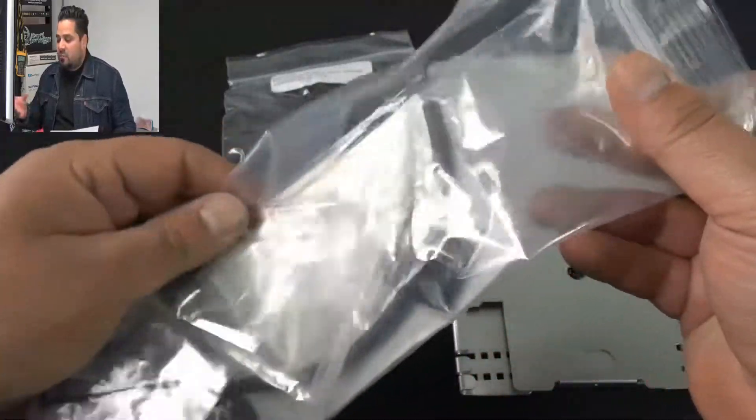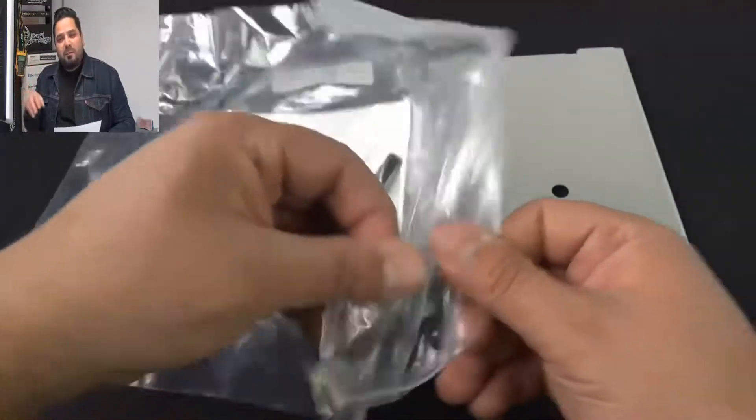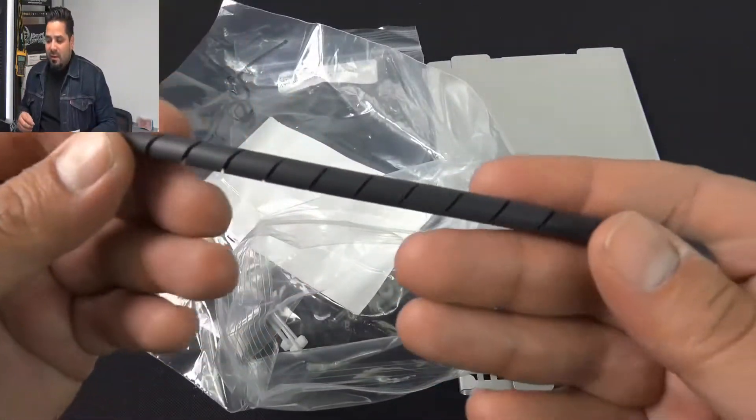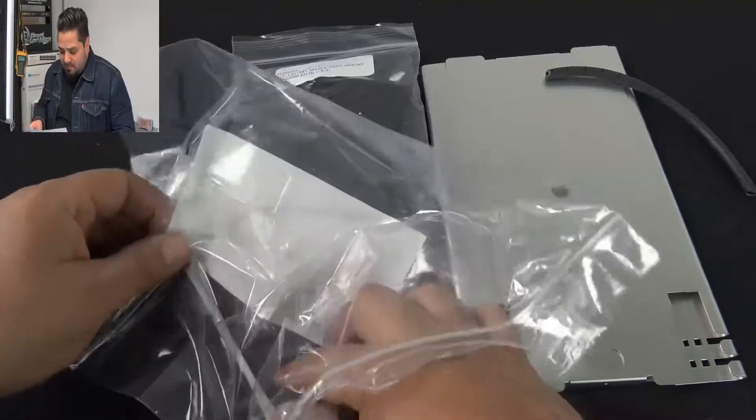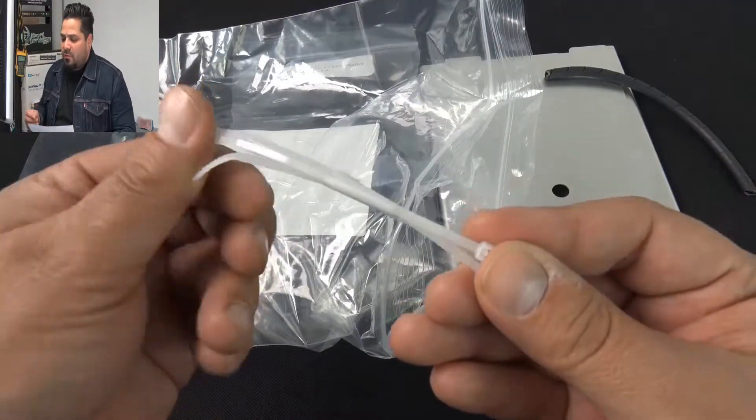As you open the package there's some miscellaneous items there to help you install the fiber proper, keep your install nice and neat. We have a cable management sleeve there, the spiral wrap style, and we also have some zip ties. Looks like they threw four of those in there.